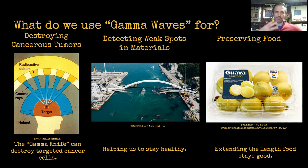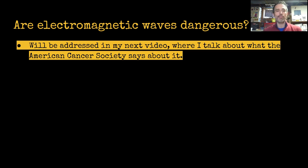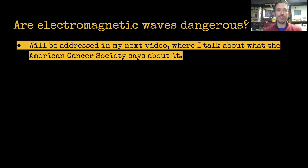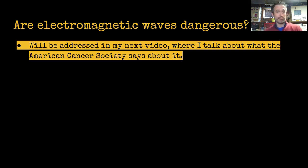That was my whole overview of electromagnetic waves. There are some resources in the description section below — there's a really good page on NASA's website that I'll link. My next video will address what the American Cancer Society says about electromagnetic waves, primarily the effects of ionizing radiation — the stuff smaller than visible light — compared to the stuff larger than visible light, and talking about the safety behind those things. As long as you're smart about things, you don't really have a lot to worry about. Thank you so much, I hope you learned something. If you have questions, comment below, and if there's a need for another video I'll be happy to make it. Have a wonderful day, everybody.